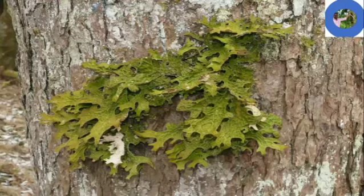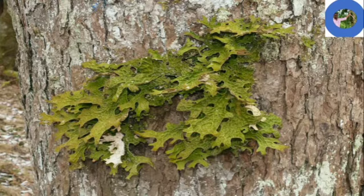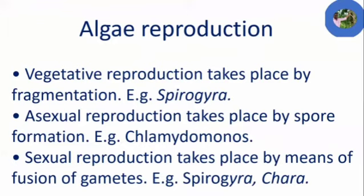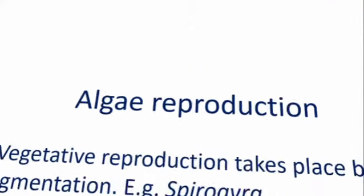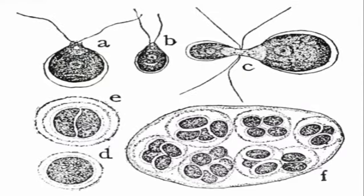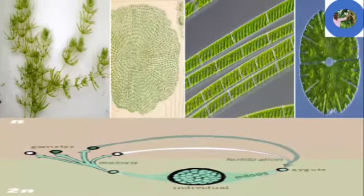Some species of algae live on the surface of other trees — this kind of algae is called epiphytes. The study of algae is called algology or phycology. Reproduction in algae includes: vegetative reproduction by fragmentation (as in Spirogyra), asexual reproduction (as in Chlamydomonas), and sexual reproduction (as in Spirogyra and Chara).